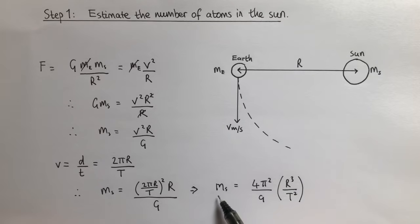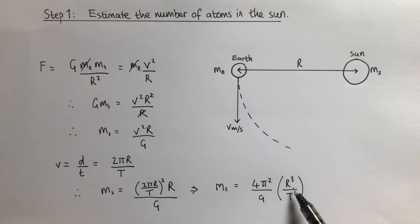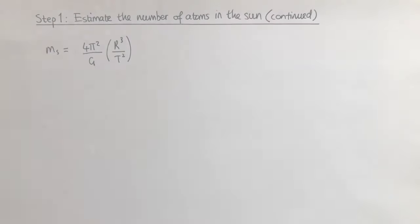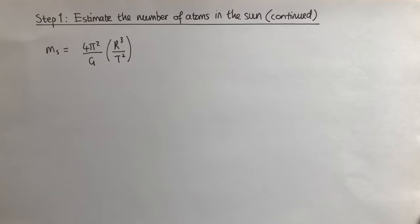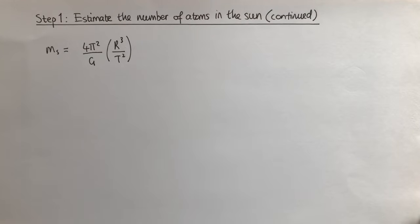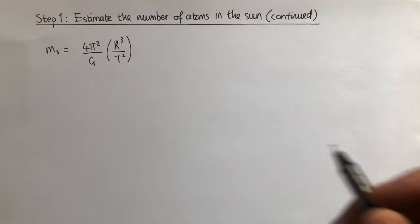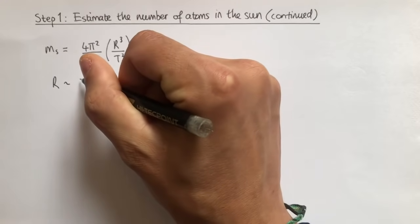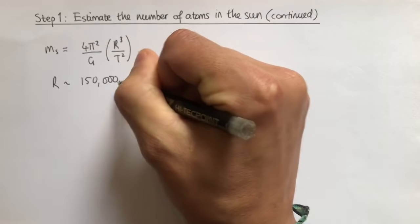Notice that we can now calculate the mass of the Sun if we know the radius of the Earth's orbit around the Sun and the time it takes for the Earth to complete an orbit. Thankfully, these measurements are known to a high degree of accuracy. I'm going to take the radius of the Earth's orbit to be approximately 150 million kilometres.